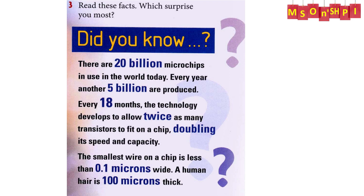Every 18 months, the technology develops to allow twice as many transistors to fit on a chip, doubling its speed and capacity. The smallest wire on a chip is less than 0.1 microns wide. A human hair is 100 microns thick.